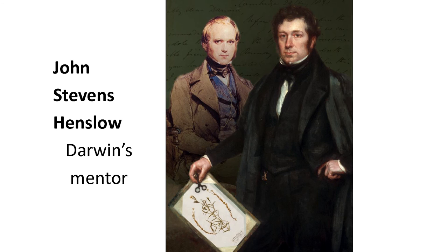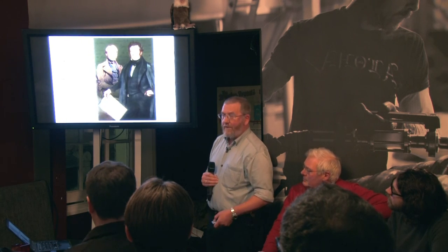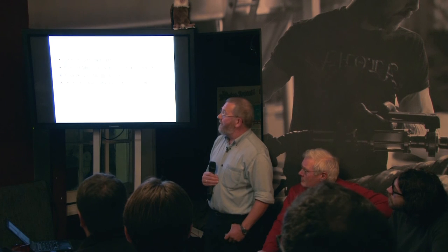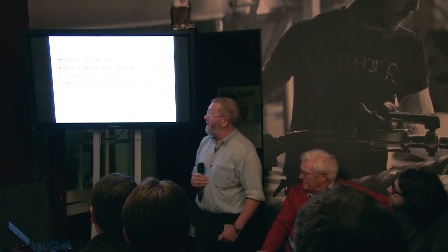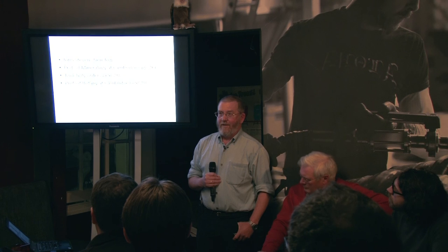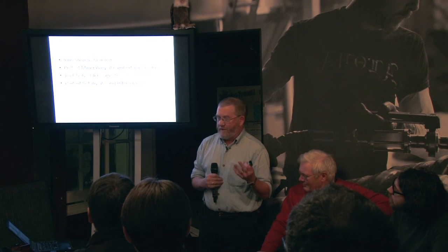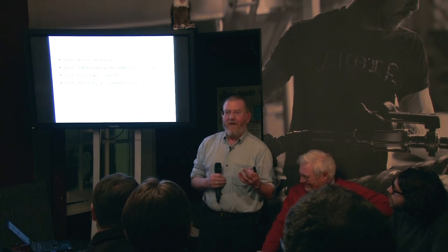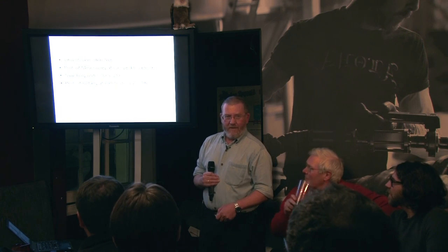Not only do I have a picture of John Stevens Henslow, I have a picture of him with Darwin — and Darwin does not have a beard. Henslow was a fascinating guy: professor of mineralogy at Cambridge by age 26, took holy orders at 28, and professor of botany at Cambridge by 29. He was unbelievably bright and quite clearly a polymath. When you read about him, everybody loved him — he was not a pain in the neck.